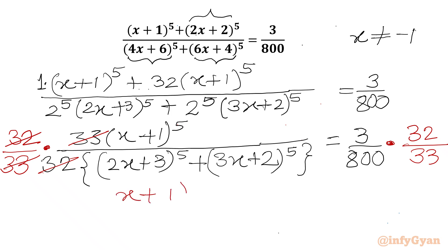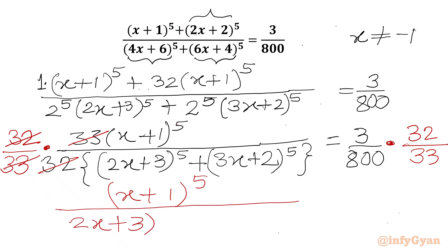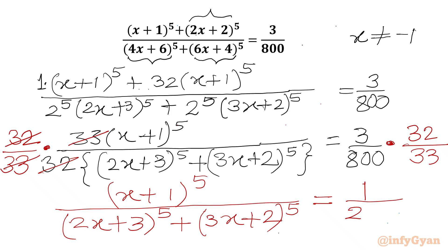So our equation becomes (x+1) whole power 5 over (2x+3) whole power 5 plus (3x+2) whole power 5, and the RHS will be 1 over 275 once we simplify. We can cancel 3 and 33 to get 11, and cancel 32 and 800 to get 25. So 25 times 11 is 275.